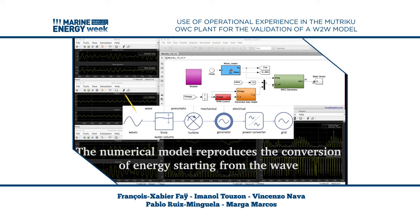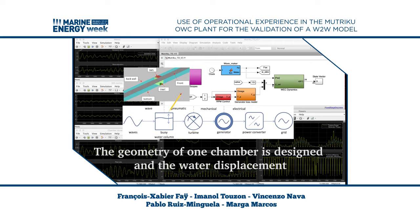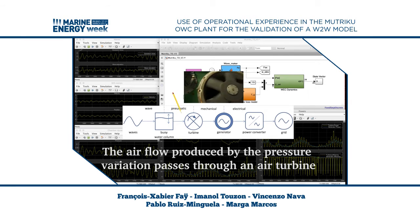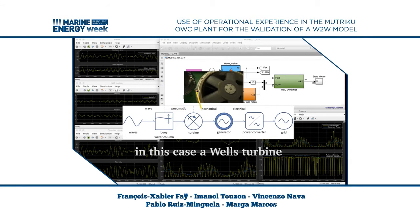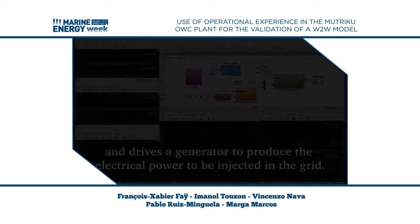The numerical model reproduces the conversion of energy starting from the wave acting on the internal water surface until the power produced by the generator. The geometry of one chamber is designed and the water displacement inside the chamber is computed using a hydrodynamic solver. The airflow produced by the pressure variation passes through an air turbine — in this case a Wells turbine — and drives the generator to produce the electrical power to be injected into the grid.